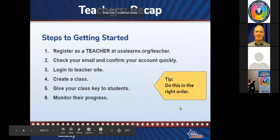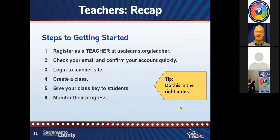To recap the sequence of steps: first, register as a teacher at usalearns.org/teacher. Then you'll quickly get a confirmation email — go check it and click the big long link to confirm your account. Then log into the teacher site and create a class. When you're ready, distribute your class key to your students — but keep in mind they should already have USA Learns accounts before you give them the key, because that's another common point of confusion. Then monitor your students' progress as they complete the work.